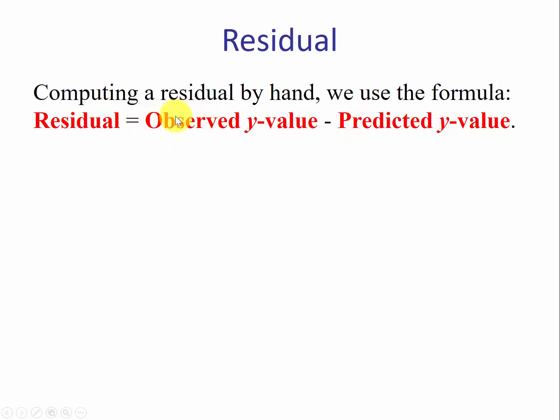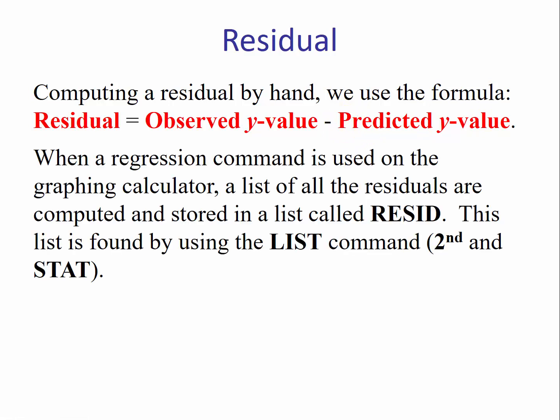When a regression command is used on the graphing calculator, a list of all the residuals are computed and stored in a list called RESID, short for residual. This list is found by using the LIST command, which is 2nd and then STAT. When you hit 2nd STAT, the last list that you can see is this residual list.